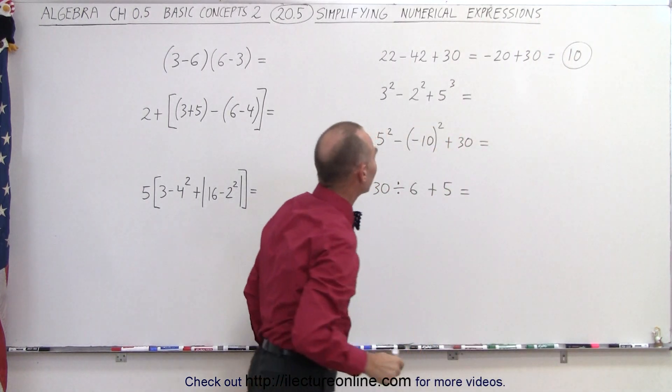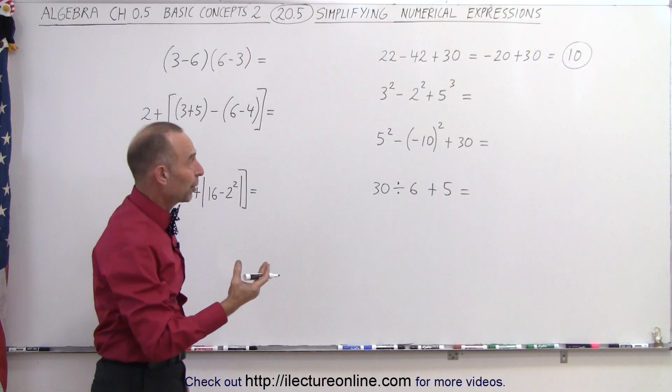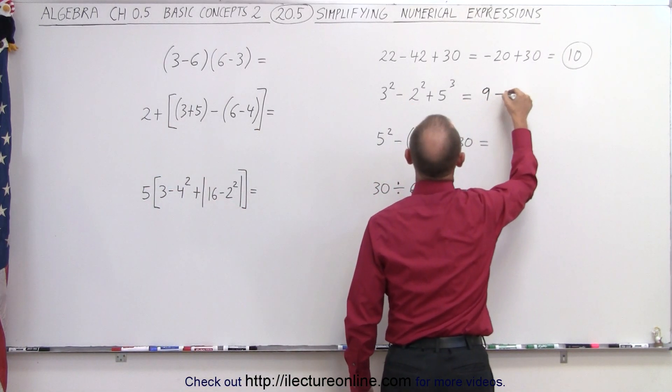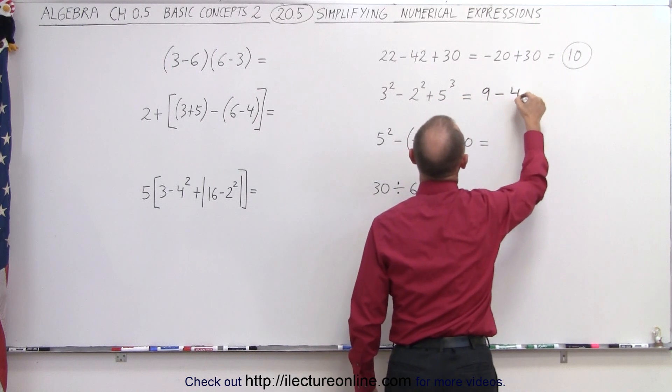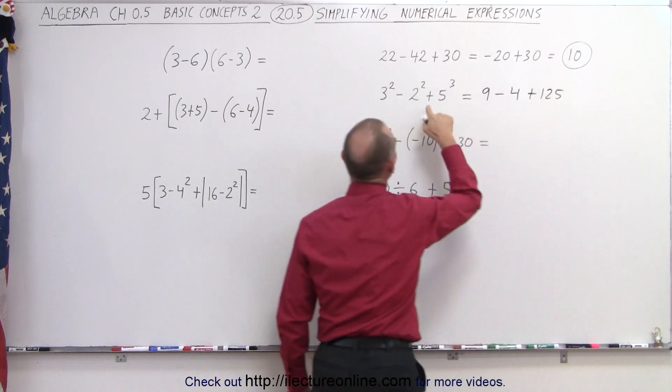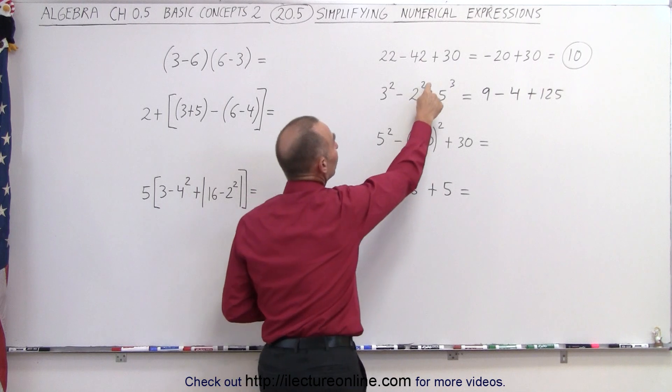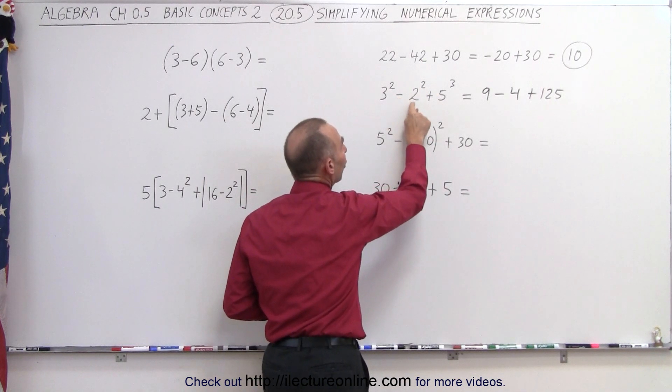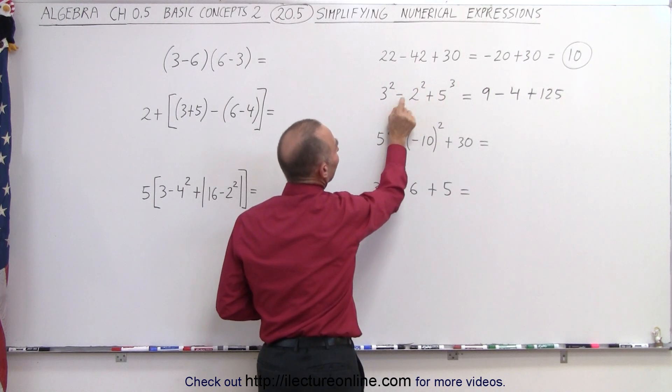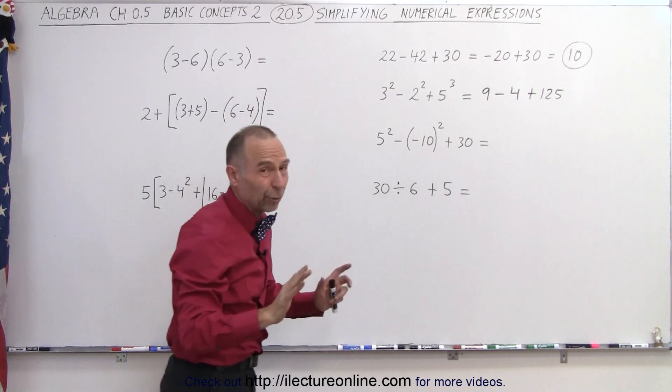On the next one, we can see that we have a subtraction, an addition, and exponents. Exponents have a higher priority, so we do those first. So here we have 3², which is 9, minus 2², which is 4, plus 5³, which is 125. Notice that this square, this exponent 2², does not apply to the negative sign, only to the value 2 here. If we had to put that in parentheses, then that negative is included, and the exponent would also apply to the negative sign, but of course not in this case.